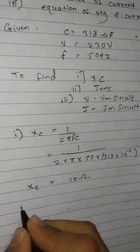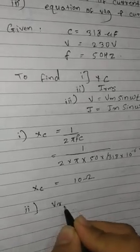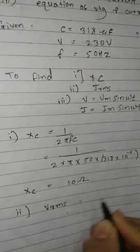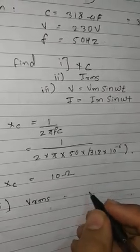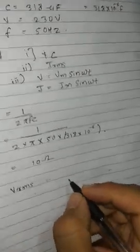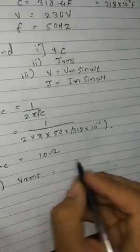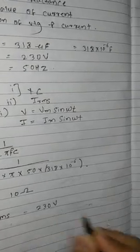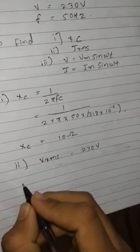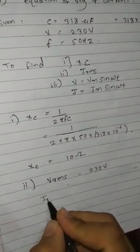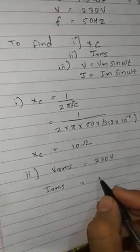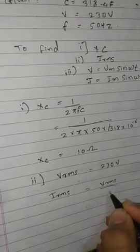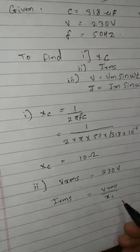Now we have to find VRMS. VRMS is the given supply voltage, which is 230V. IRMS is equal to VRMS upon XC.